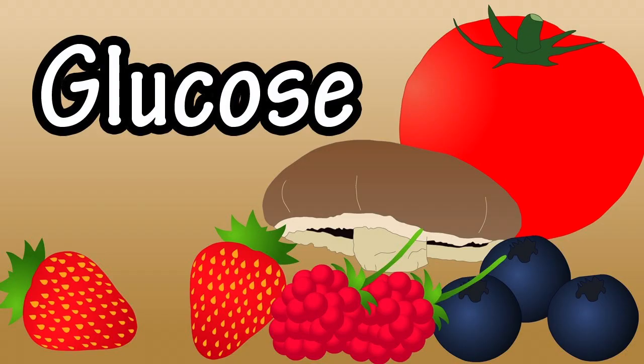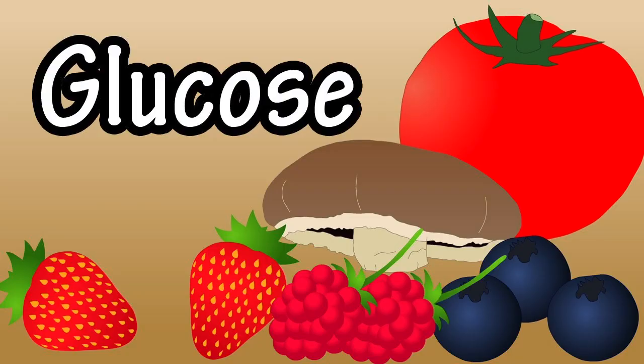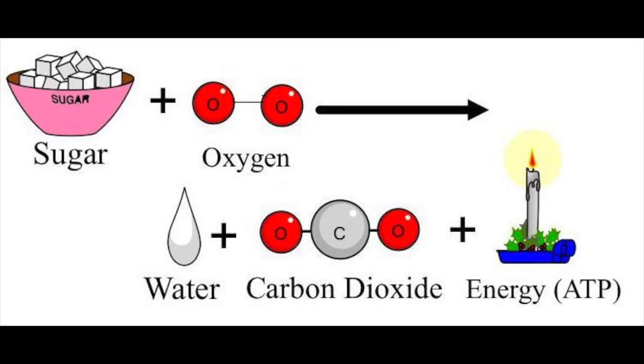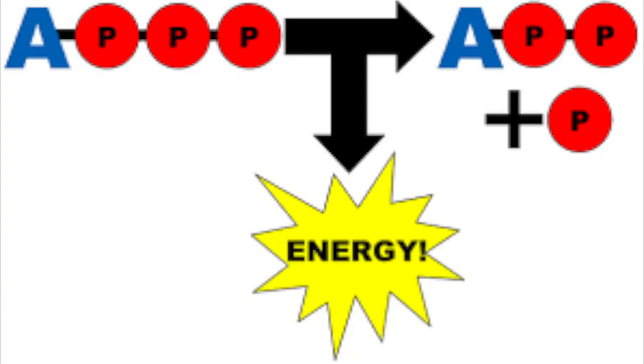These reactants yield glucose and oxygen. Glucose is used by the plant for food while oxygen is released and is what all consumers breathe in order to perform respiration, which makes ATP — the form of energy that all of our cells need.